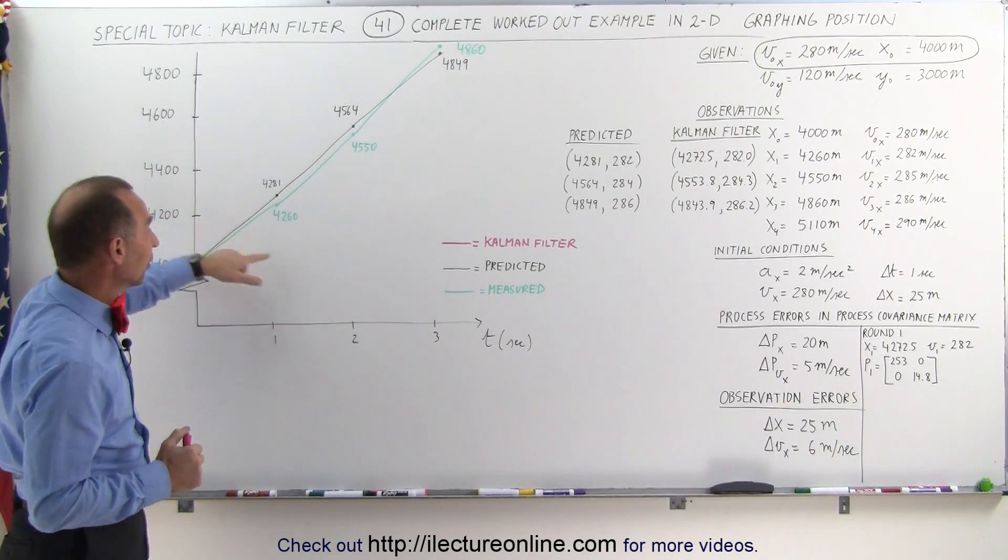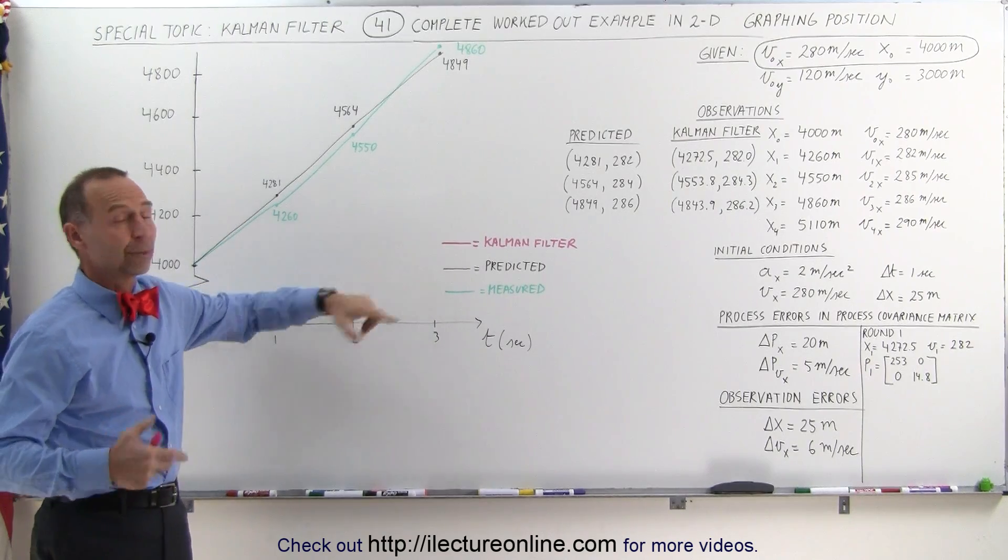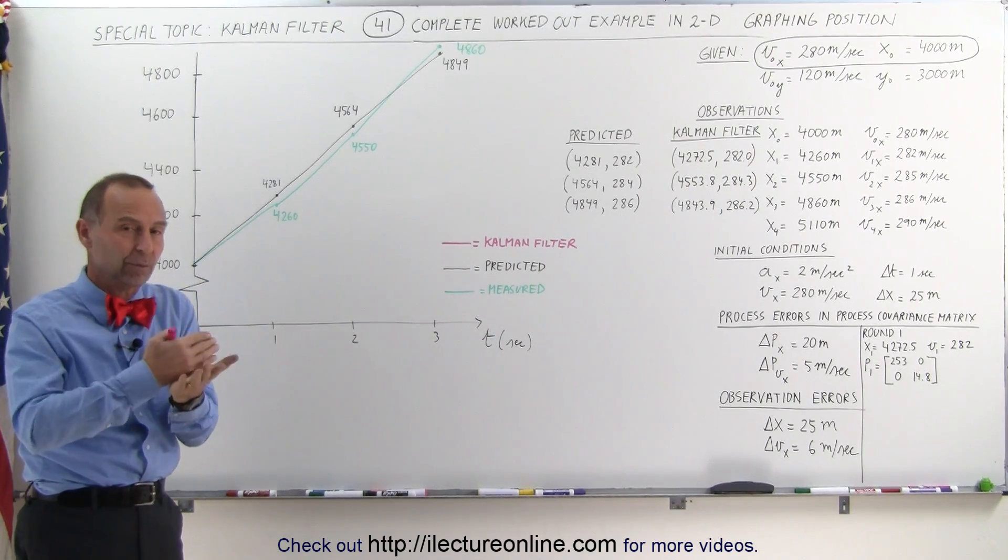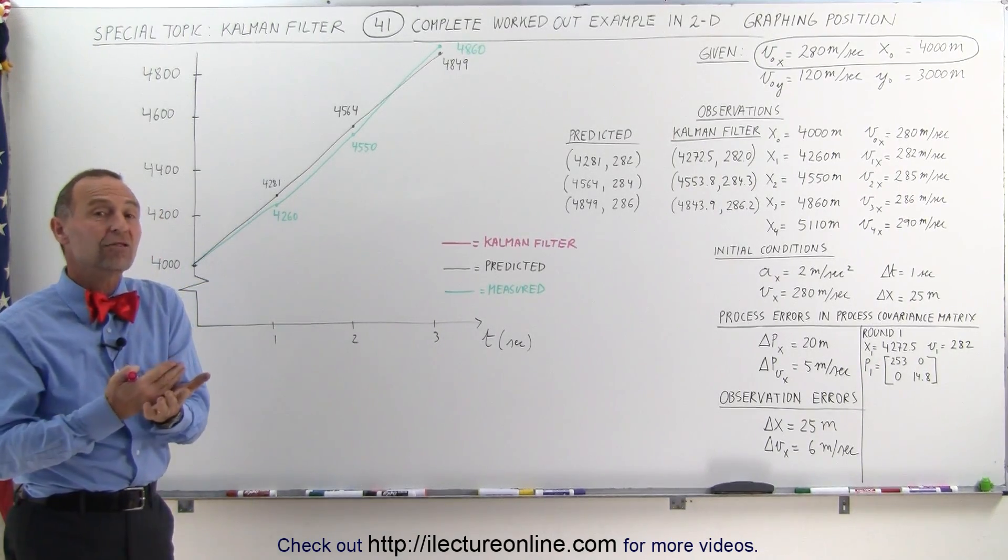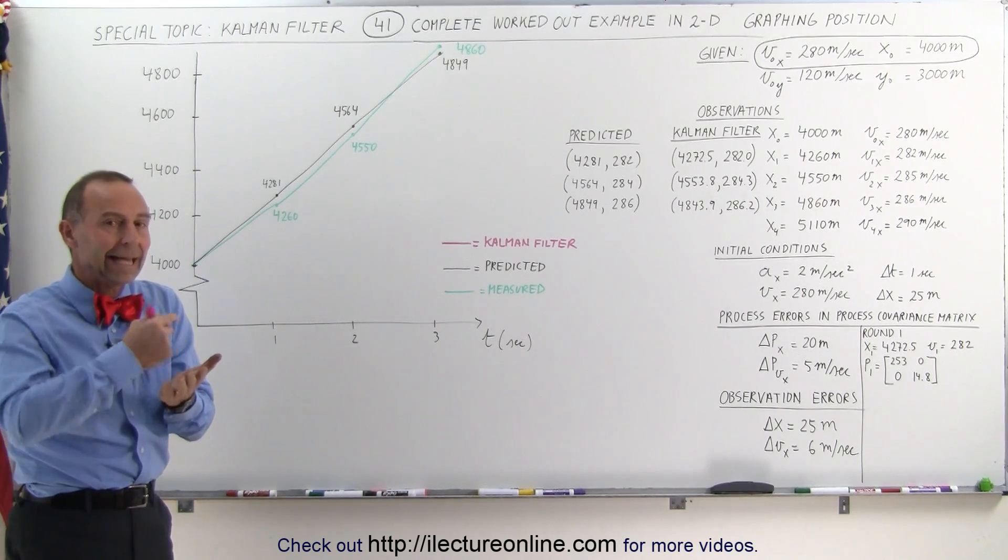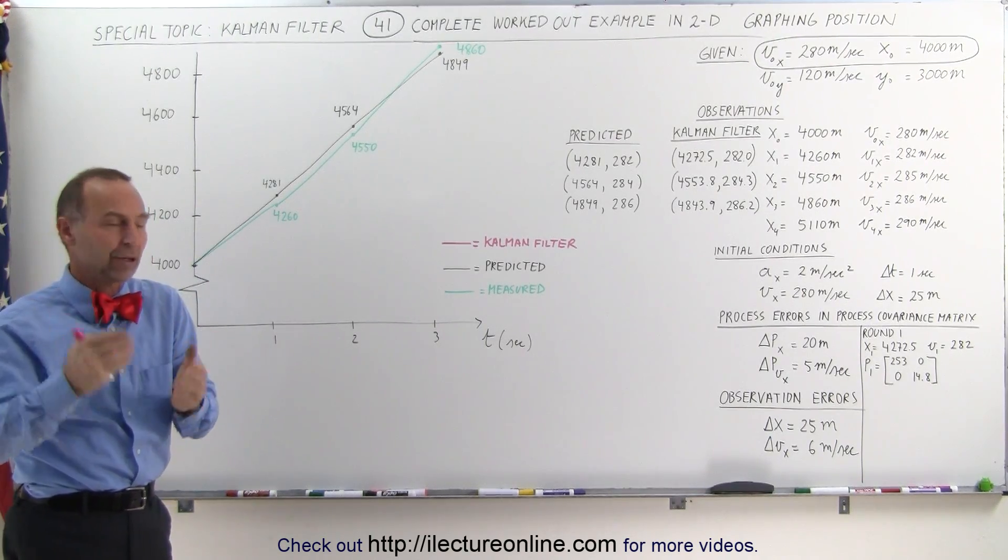First of all, we're going to graph it according to the predicted values. The predicted values simply were the initial position, the assumed acceleration, the assumed initial velocity, and then simply extrapolating it out as if everything was perfect.